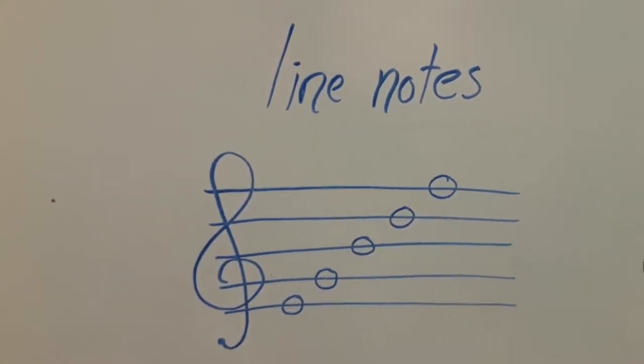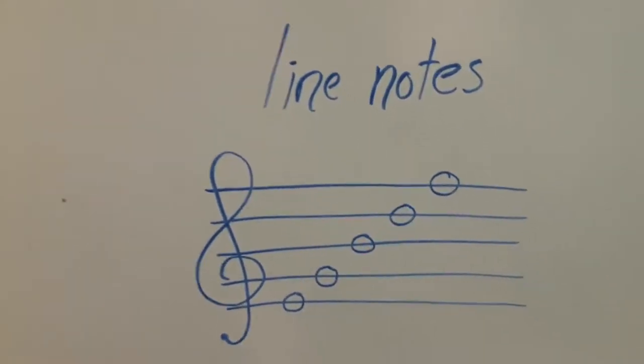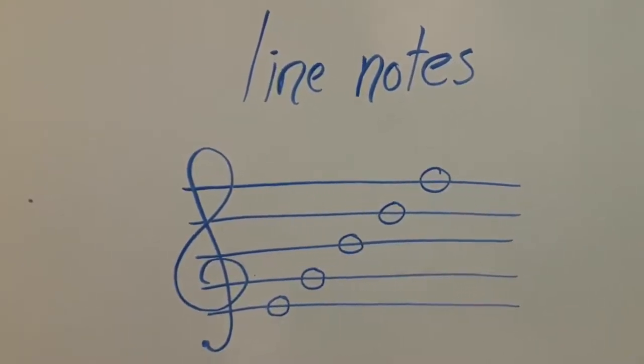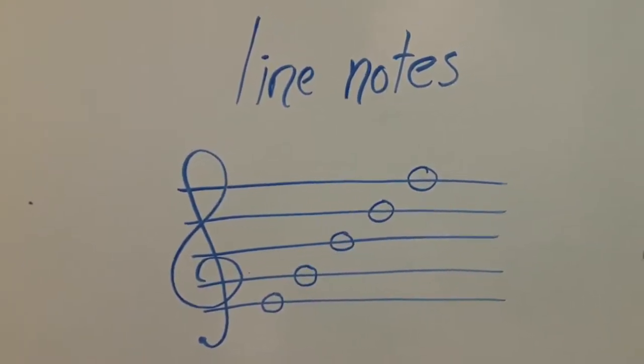And in treble clef they would be E, G, B, D, F from the bottom on up. And you can see that the line is splitting the circle right in the middle.